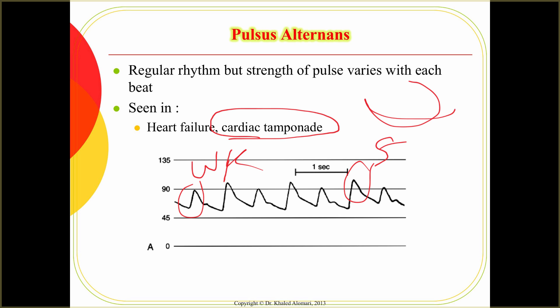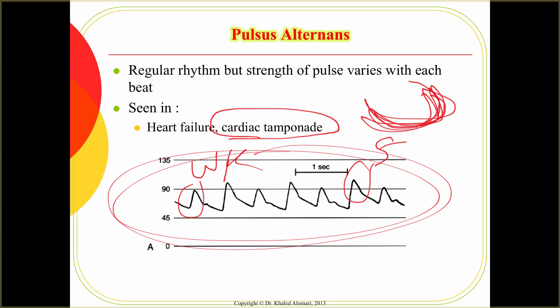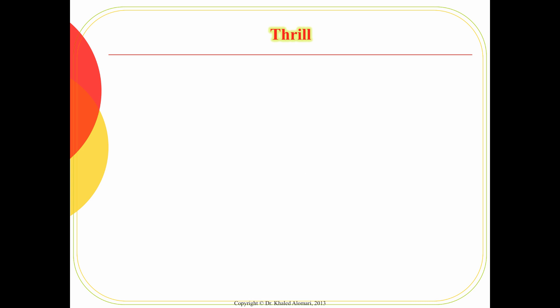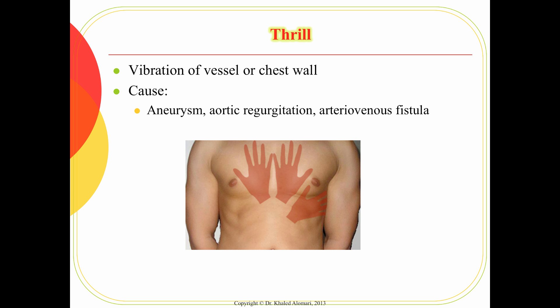Pulsus alternans can be seen in cardiac tamponade, when fluid surrounds the heart and restricts its movement — similar to pleural effusion. So when you have a pericardial effusion, pulsus alternans is one of the classical symptoms you may see in this kind of patient. The rhythm is regular, but the strength is not.